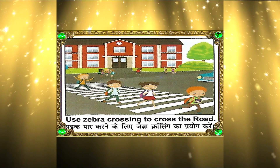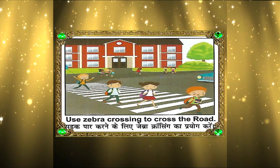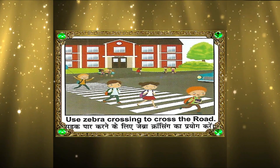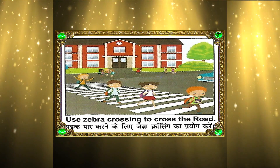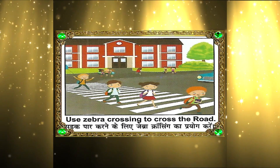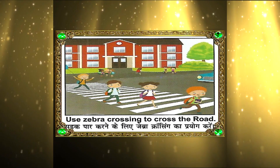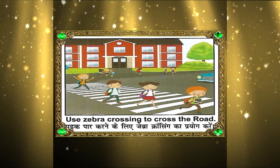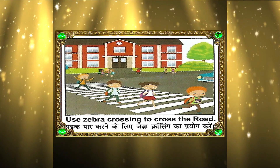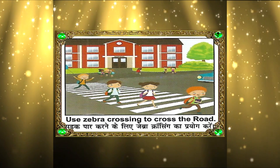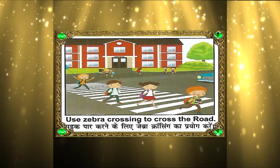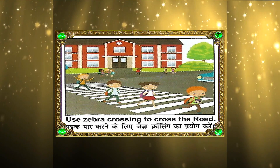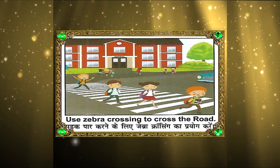Number 1: Use Zebra Crossing to Cross the Road. Sadak par karne ke liye zebra crossing ka preok kare. Whenever we cross the road, we should use zebra crossing to prevent accidents caused by cars and bikes.